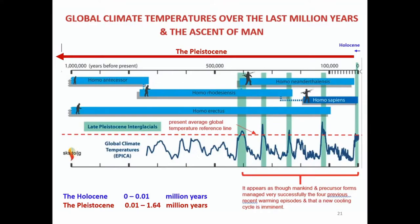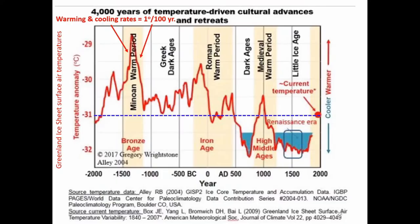Many climate alarmists recognise earlier climate highs going back in geological time, some millions of years, predating human existence, and are concerned that future heating events may make life unbearable for modern humans who have never experienced these earlier conditions. This chart shows the last 1 million years of climate history, extending back to the development of our early human-like precursors. It appears that mankind and precursor forms managed very successfully for four previous recent warming episodes, and that a new cooling cycle is imminent.